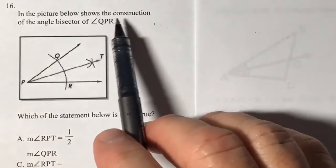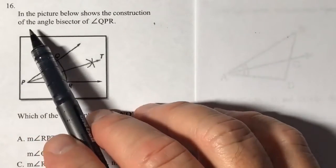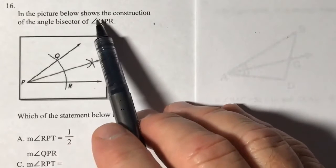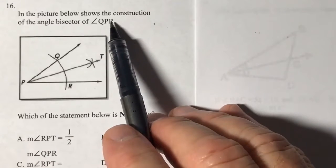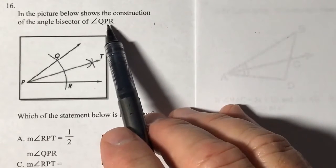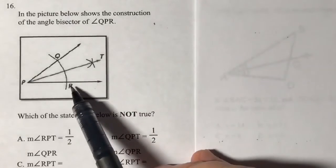In the picture below shows the construction of the angle bisector of angle QPR. Go ahead and locate those letters on the diagram, QPR, right?